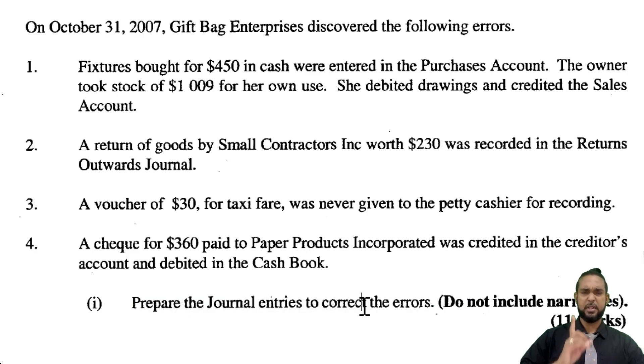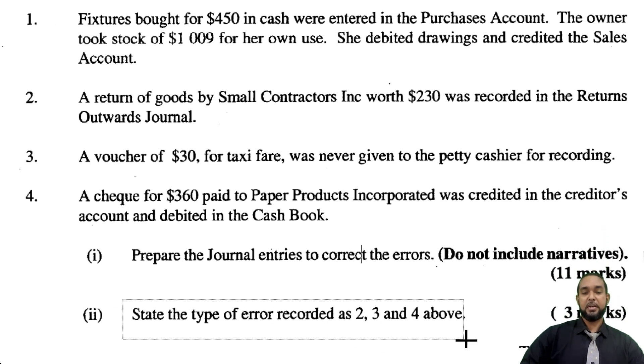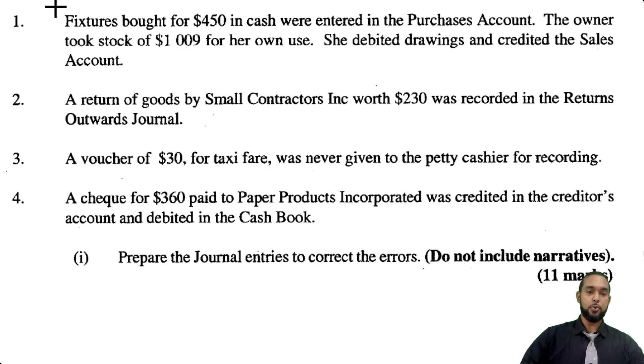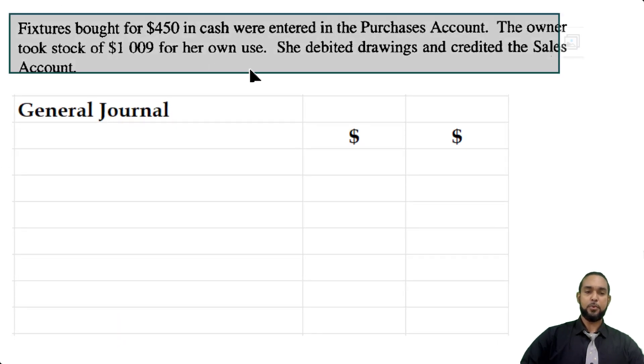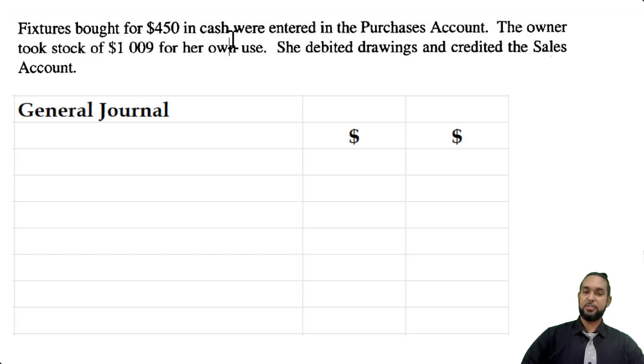And that kind of covers what we're supposed to do in item two here, state the type of error in two, three, and four above. Okay, so one at a time now. Now the funny part about one at a time is that in item one, they had two errors. First thing, it says that fixtures bought for $450 in cash were entered in the purchase account.